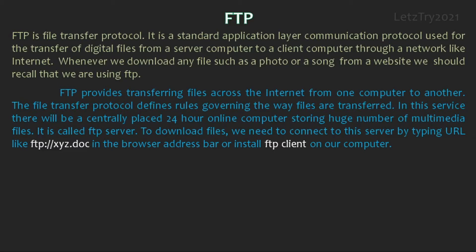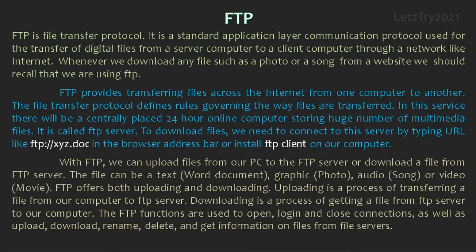To download files, we need to connect to this server by typing a URL like ftp.xyz.com in the browser address bar, or install an FTP client on our computer. With FTP, we can upload files from our PC to the FTP server or download a file from the FTP server. The file can be text like a Word document, graphic like a photo, audio such as a song, or video such as a movie. FTP offers both uploading and downloading. Uploading is transferring a file from our computer to the FTP server. Downloading is getting a file from the FTP server to our computer.